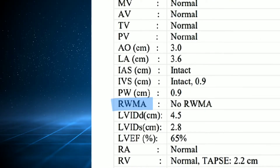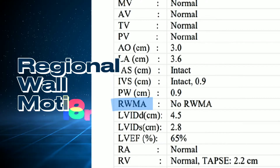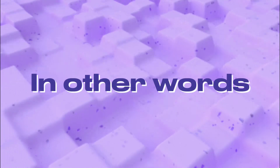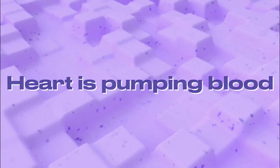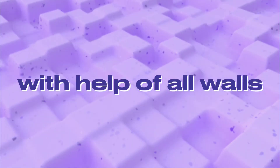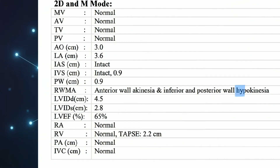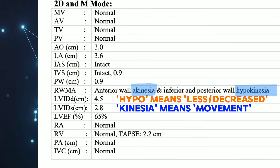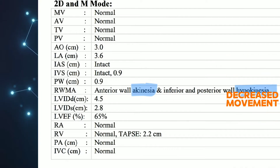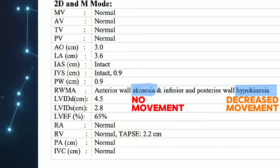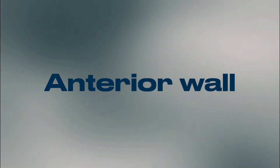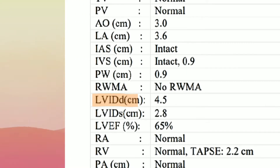Next is RWMA — regional wall motion abnormality. It is about the movement or motion of the heart; in other words, how fluidly the heart is pumping with the help of all walls. The most common terms are hypokinesia and akinesia. 'Hypo' means less or decreased, and 'kinesia' means movement, so hypokinesia means decreased movement, and akinesia means no movement at all. The walls assessed are the anterior wall, posterior wall, lateral wall, inferior wall, apex, and IVS.